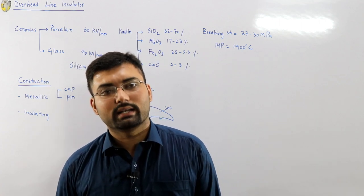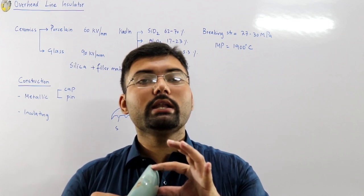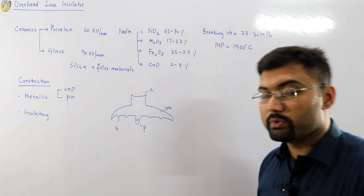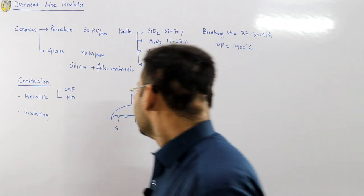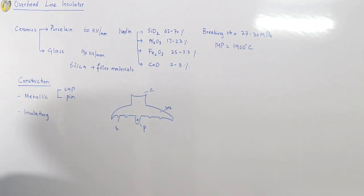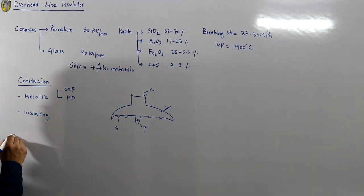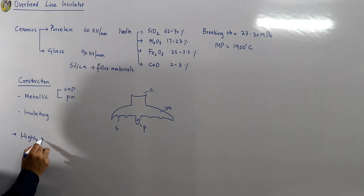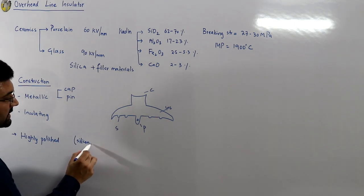Since you have two metallic contacts with a dielectric in between, this acts as a capacitor — we will model an insulator as a capacitor in the next video. The insulator is made highly polished and clean, and the final finishing for the porcelain insulator is given by a compound called silicon grease.